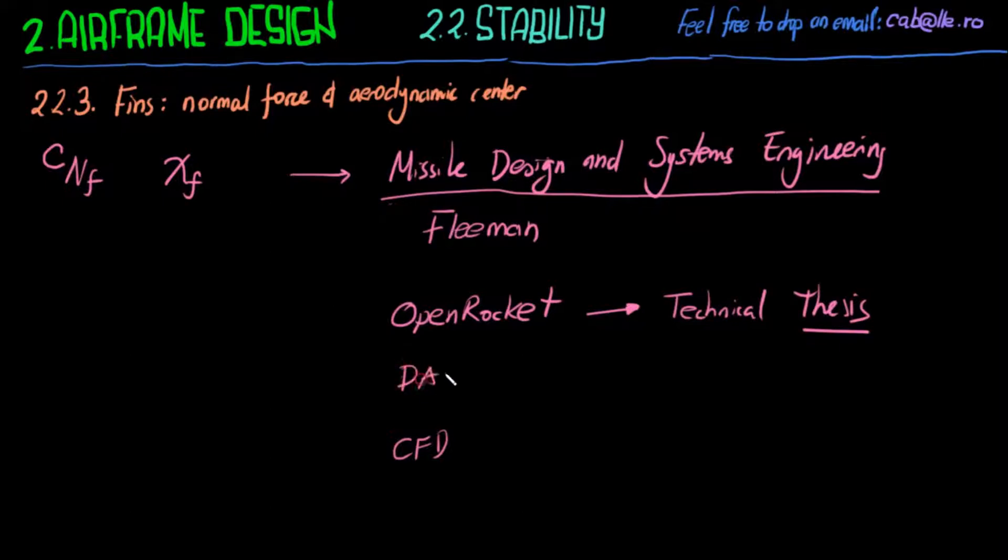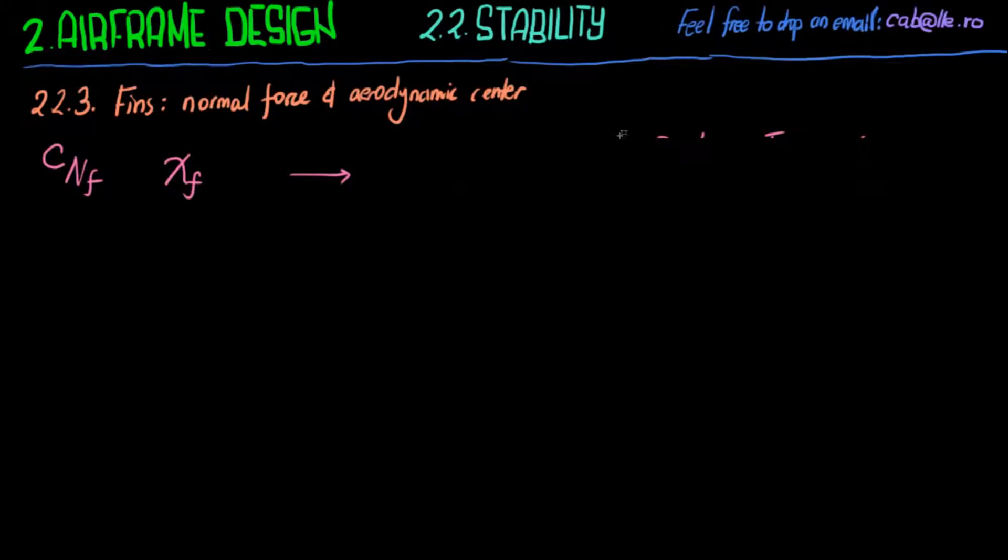If you want to go in between, there's Missile DATCOM. This is what the US Army uses for preliminary designs of missiles. But for most uses this is more than enough. We're going to do a lot of simplifications to do an analytical analysis on the stability of the rocket. So I'm going to stay with Fleeman's aerodynamic model.